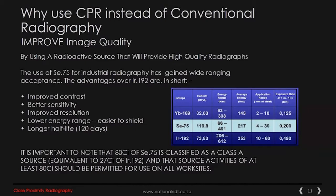In terms of improving image quality, the use of Selenium 75 for industrial radiography has gained wide acceptance. The advantages over Iridium 192 are: better contrast, better sensitivity, improved resolution, a lower energy range — making it easier to shield — and a longer half-life. This is particularly important in long-term projects where sources are required to be reloaded to maintain production schedules.